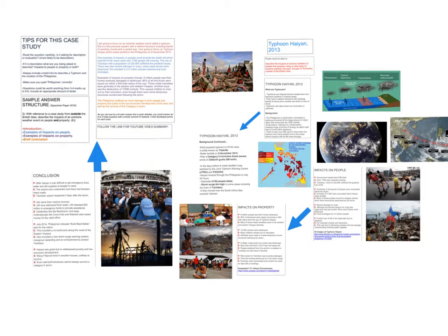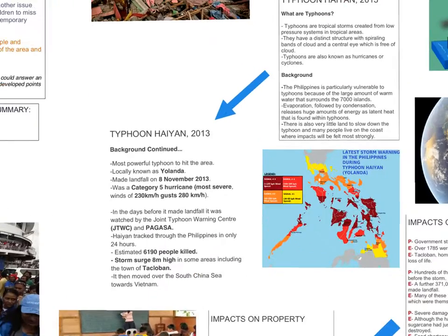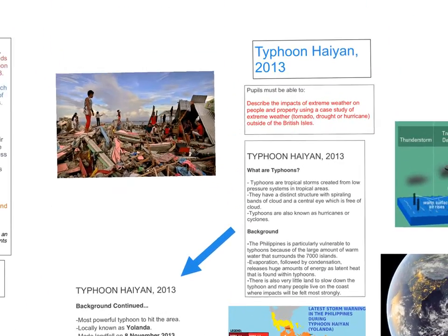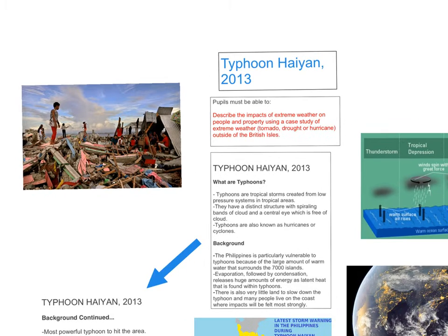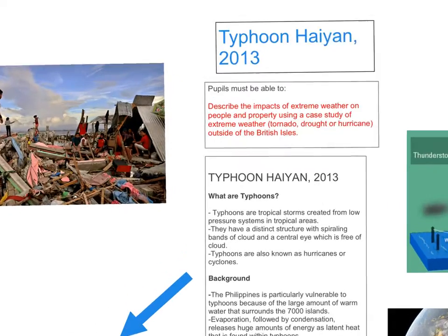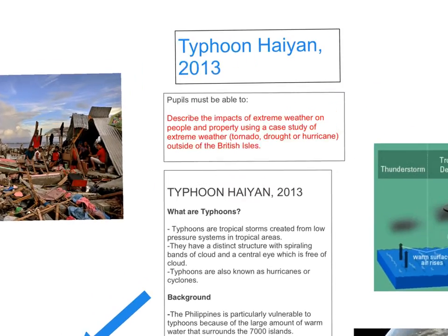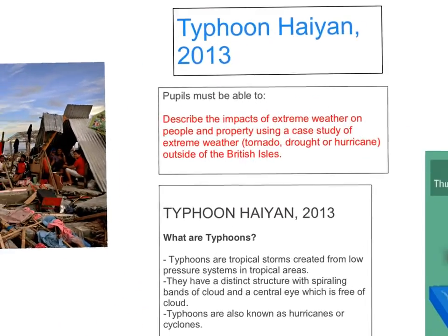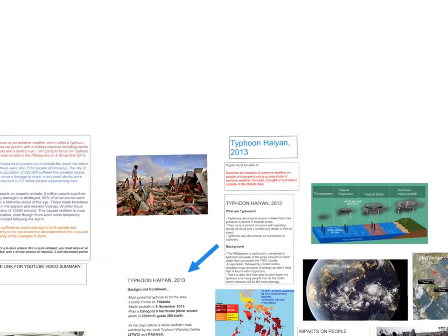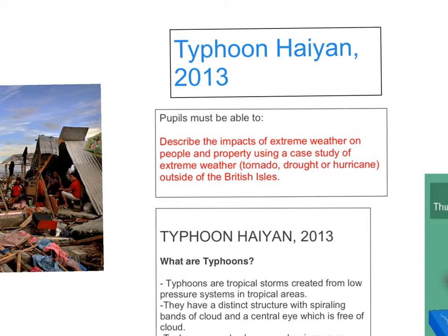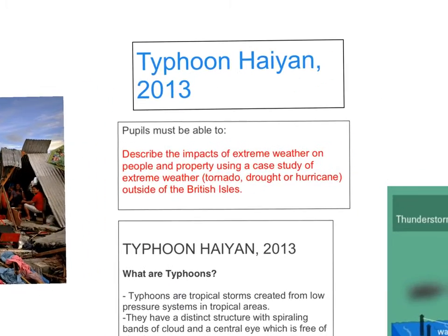Hi guys, so this is our next case study. We've got Unit 1, Theme C, and this time we're in Section 4, which looks at the impact of extreme weather on people and property. And we're going to look specifically at Typhoon Haiyan.